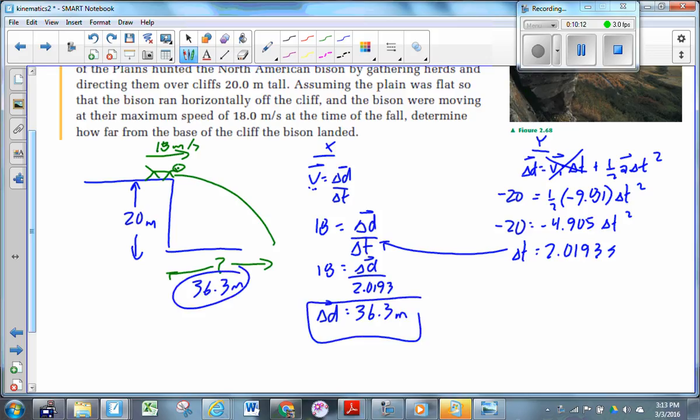So we're going to say 18 is equal to the displacement over the time of 2.0193. And then we're going to solve for displacement. See what we get when we do that. How far did the bison go? 36.3 meters. You can see that video that we watched of the guy going down the hill on the water slide and then up the ramp and into the swimming pool. You can see that in the absence of air resistance, it's very predictable where he's going to land, right? As soon as he introduced air resistance, it becomes a bit more of a problem.